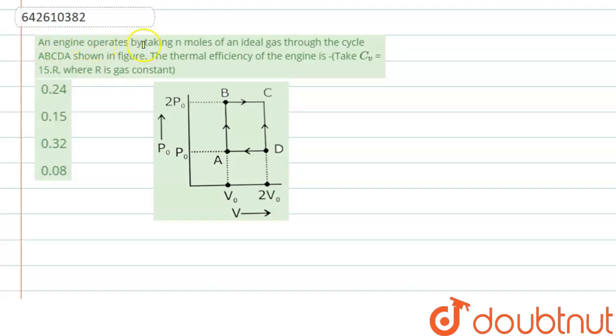Question says that an engine operates by taking n moles of an ideal gas through the cycle ABCDA shown in figure. The thermal efficiency of the engine is... So we have to calculate the thermal efficiency of a particular engine whose cycle is given in the graph.